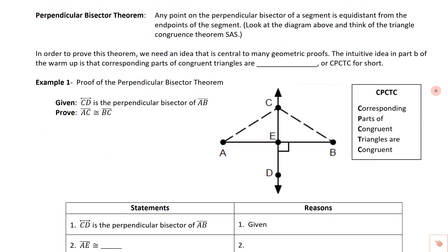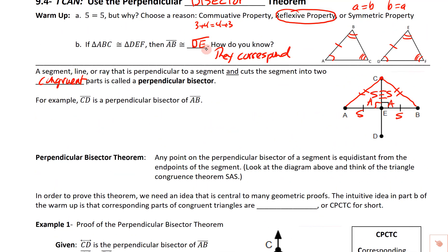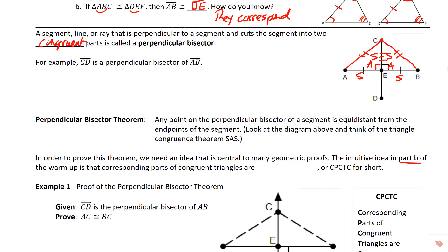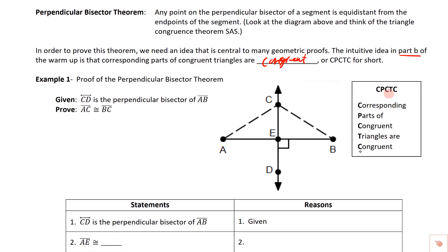What we need for this proof is an idea central to many geometric proofs. In part B of the warm-up, we said AB is congruent to DE because they're the corresponding sides of those congruent triangles — they match up. The shorthand for this is CPCTC: corresponding parts of congruent triangles are congruent. Corresponding parts of congruent triangles are congruent.